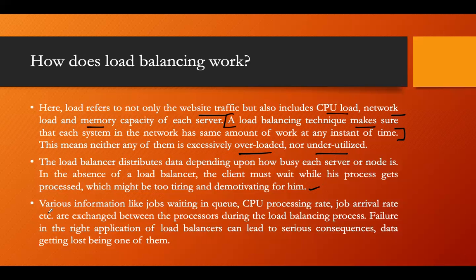Various information like jobs waiting in a queue, CPU processing rate, and job arrival time are exchanged between the processors during the load balancing process. We need to work on all those things — how many jobs are waiting, what the CPU processing rate of a server is, and what the job arrival rate is. Keeping all those things in mind, the load balancer decides which request will go to which particular server.